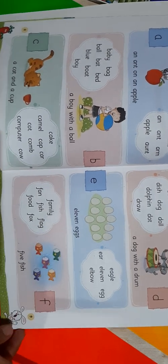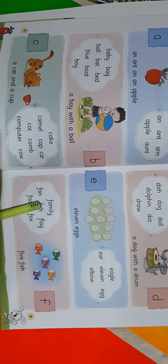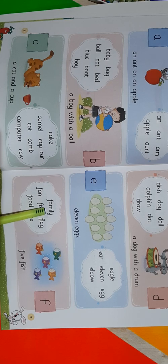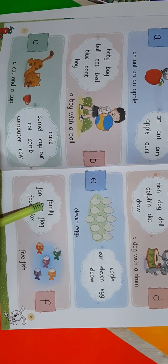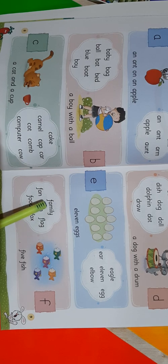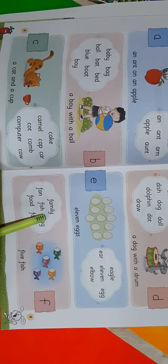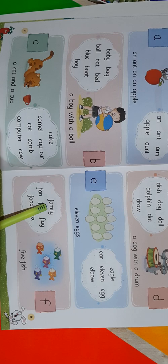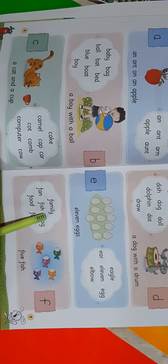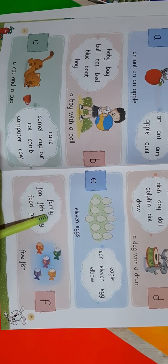Now come to the next alphabet. It's F. Next alphabet is F. Let's read out the words starting from F. This is a bit bigger word. Let's read it: F-A-M-I-L-Y, family. Repeat after me: F-A-M-I-L-Y, family. Just as I'm reading, you read the same way. F-A-M-I-L-Y, family. Repeat once again: F-A-M-I-L-Y, family.